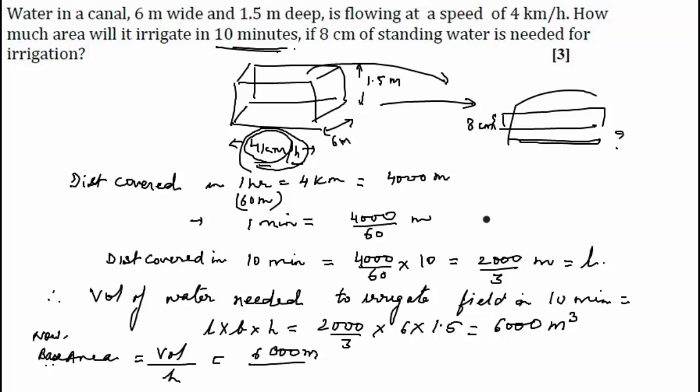Now this is meter and height is in centimeter. So we will convert height in meters, 8 by 100. So on simplification, this is meter cube, this is meter, this gives 75,000 square meter. We can leave the answer in meter square because it is not expected to convert in some particular unit. So this can be our final answer.